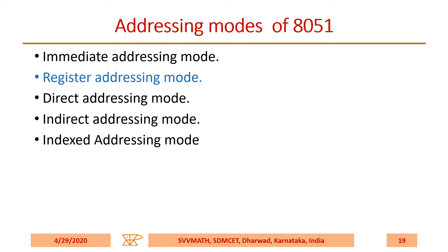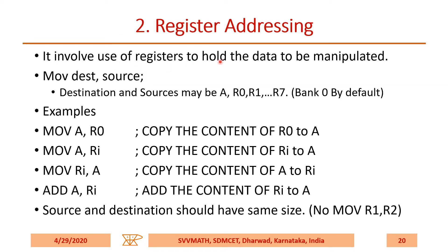Register addressing mode involves the use of a register to hold the data to be manipulated. The format is MOV destination, source where destination and source may be register A or R0 to R7. Remember, by default it is bank 0. MOV A, R0 copies the content of R0 to the A register. MOV Ri, A copies the content of A to Ri. ADD A, Ri adds the content of Ri to the accumulator. Source and destination should have the same size. Note: you cannot write MOV R1, R2 in the 8051 microcontroller.